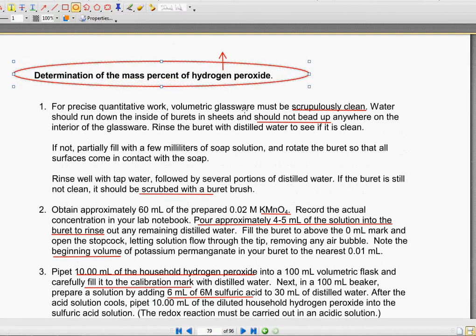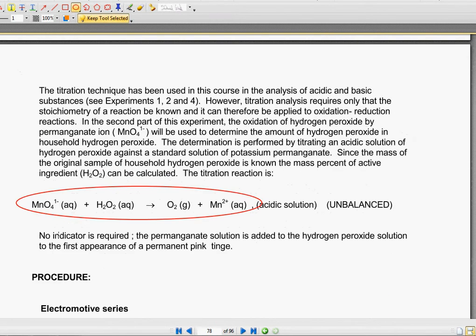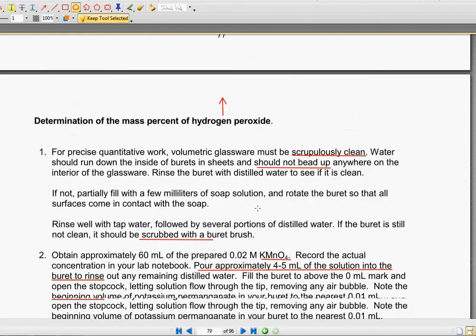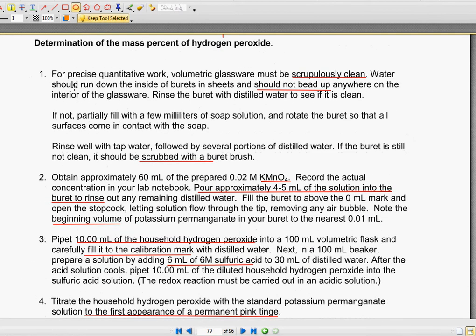The second part of the experiment is to determine the mass of hydrogen peroxide. So if we go up here, we're given a nice little reaction for hydrogen peroxide. So you've got MnO4 plus hydrogen peroxide going to just oxygen, which is just going to be released as a gas, and manganese, which is going to be in aqueous form.